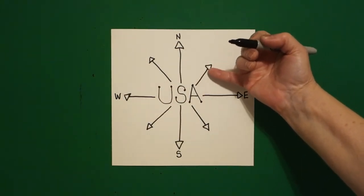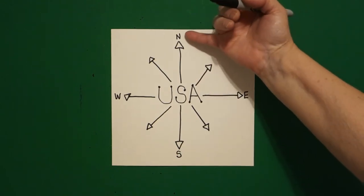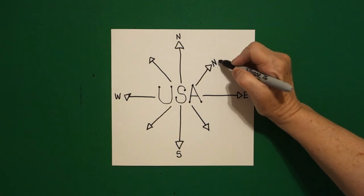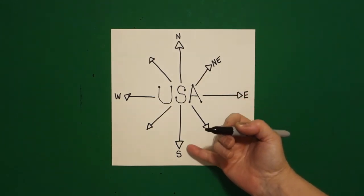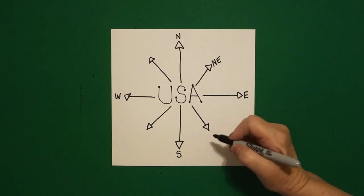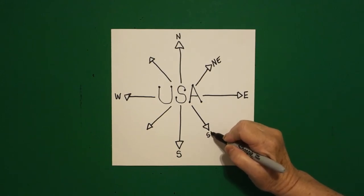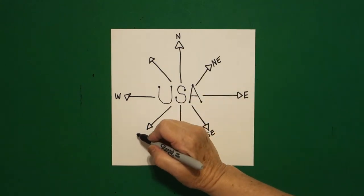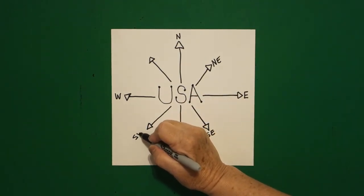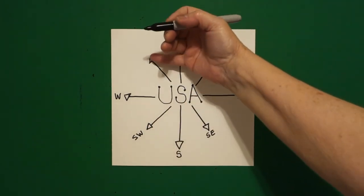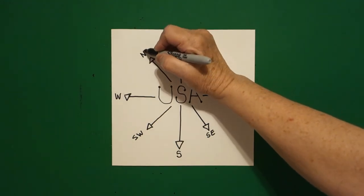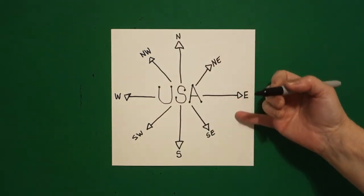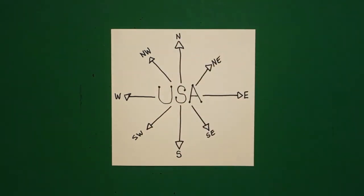Now, the part in between, this little triangle in between, this is going to be north east, N, E. This part down here is going to be south east. This part right here is going to be south west, and this part right here is going to be north west. So, these are your directionals on your compass rose.